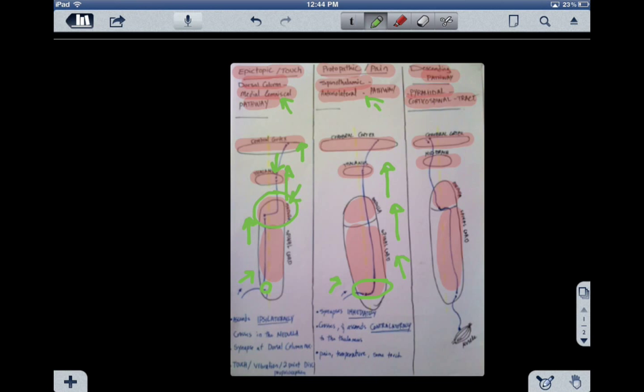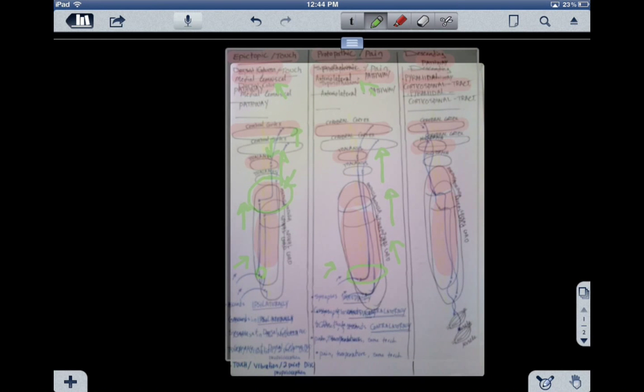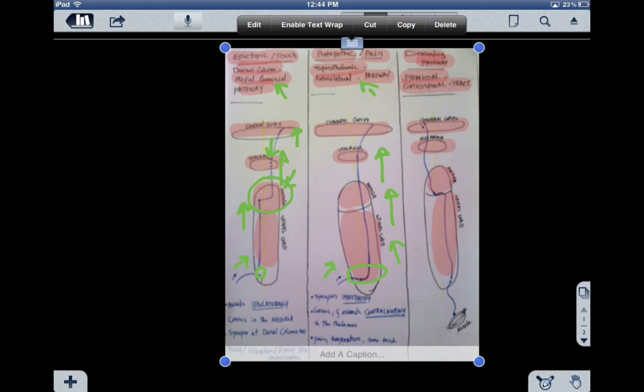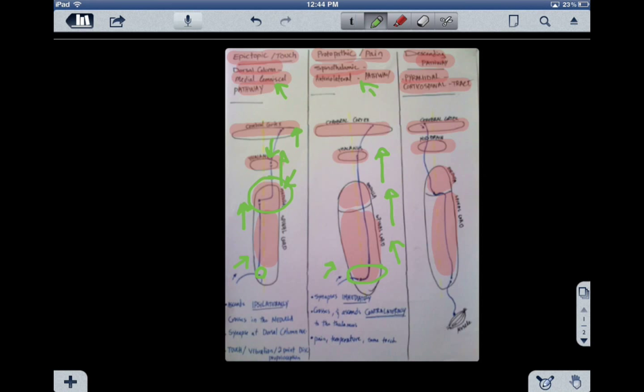And then after that, we also continue ascending. We ascend contralaterally, and then we end up at the also different kind of the cerebral cortex: one of them is the somatosensory cortex, the cingulate, and the insula.